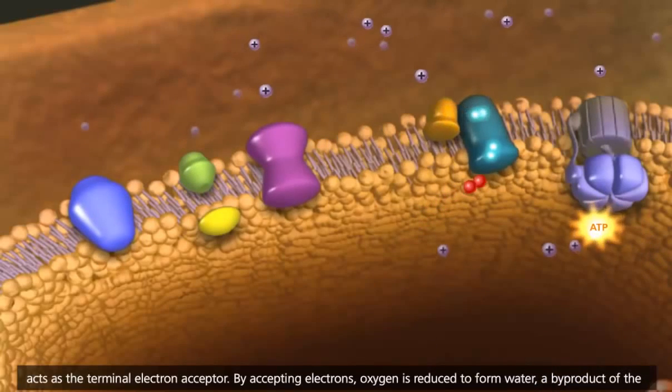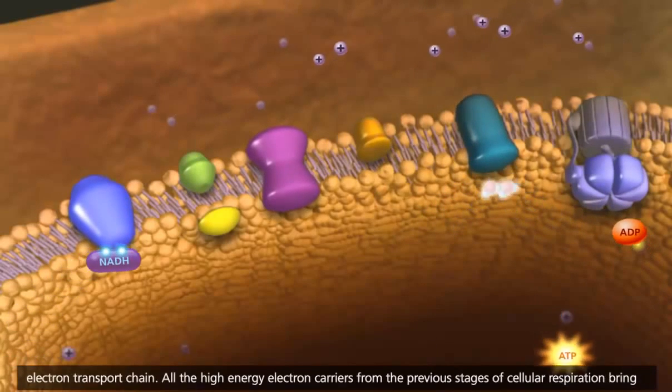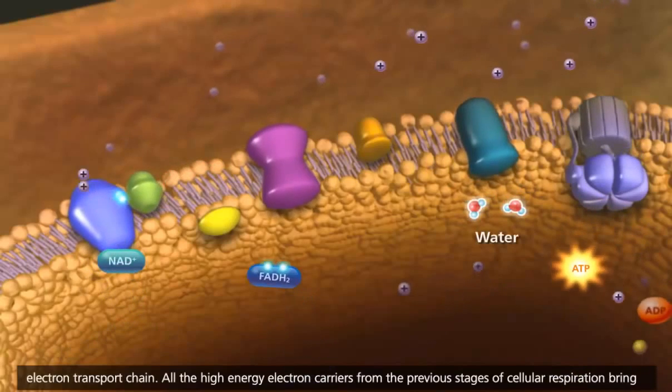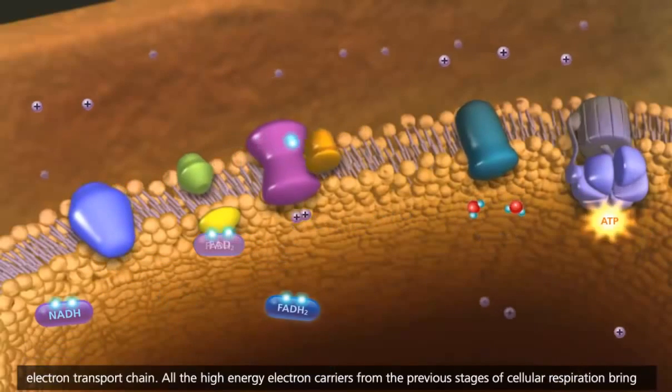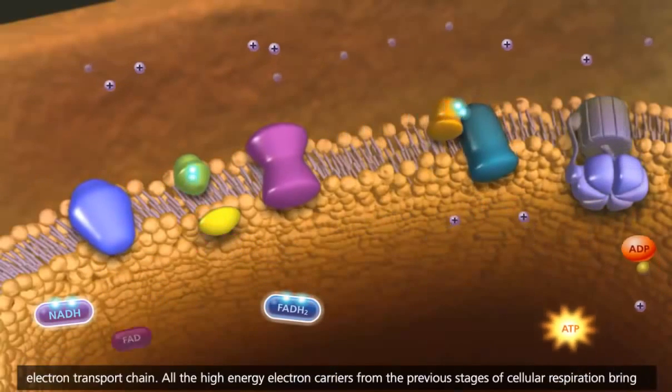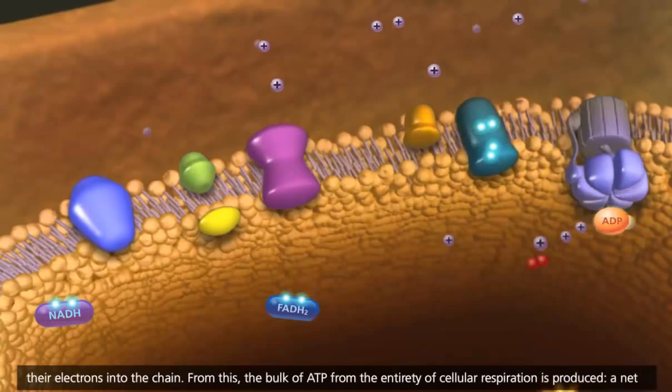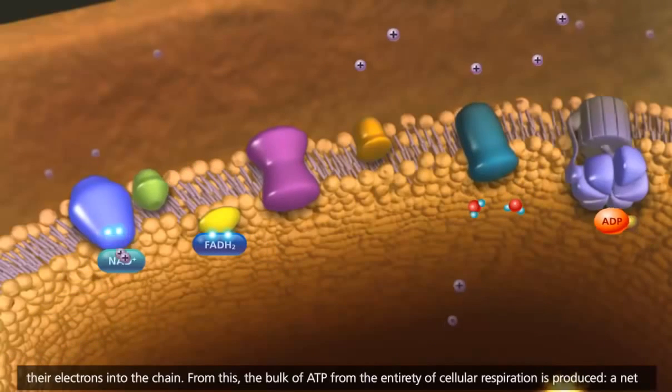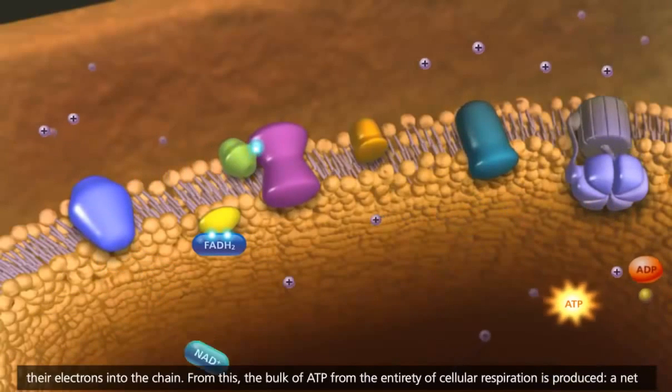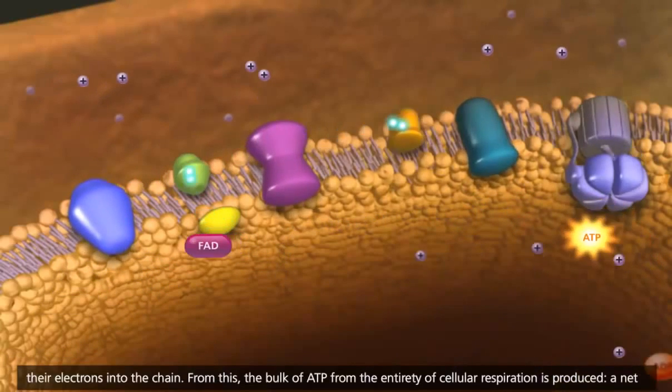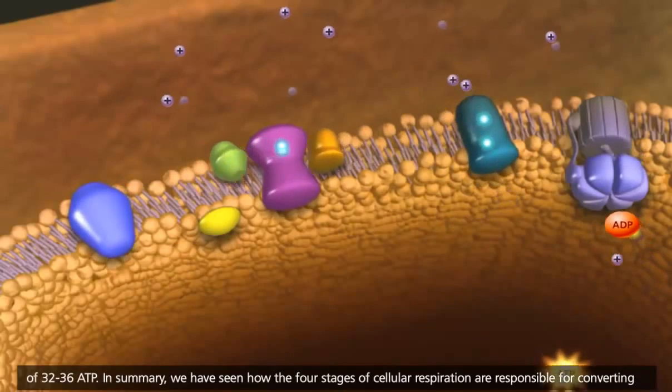Oxygen is reduced to form water, a byproduct of the electron transport chain. All the high-energy electron carriers from the previous stages of cellular respiration bring their electrons into the chain. From this, the bulk of ATP from the entirety of cellular respiration is produced - a net of 32 to 36 ATP.